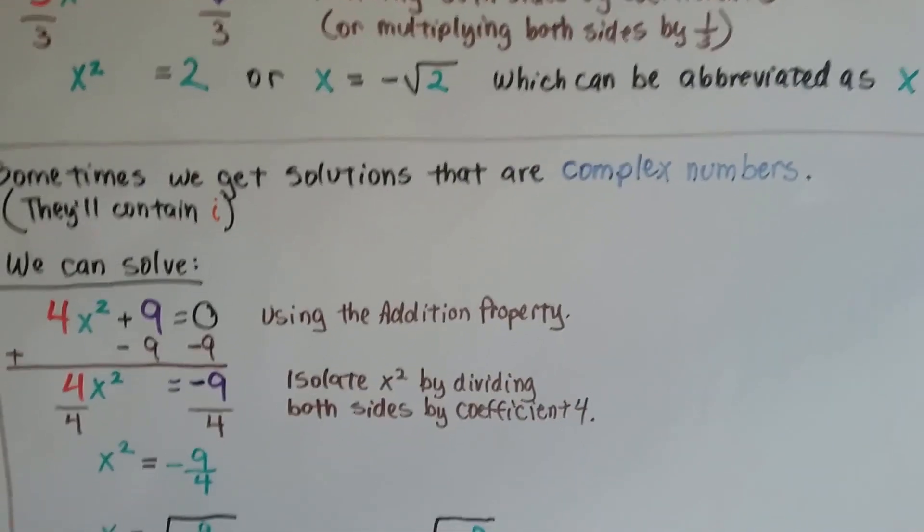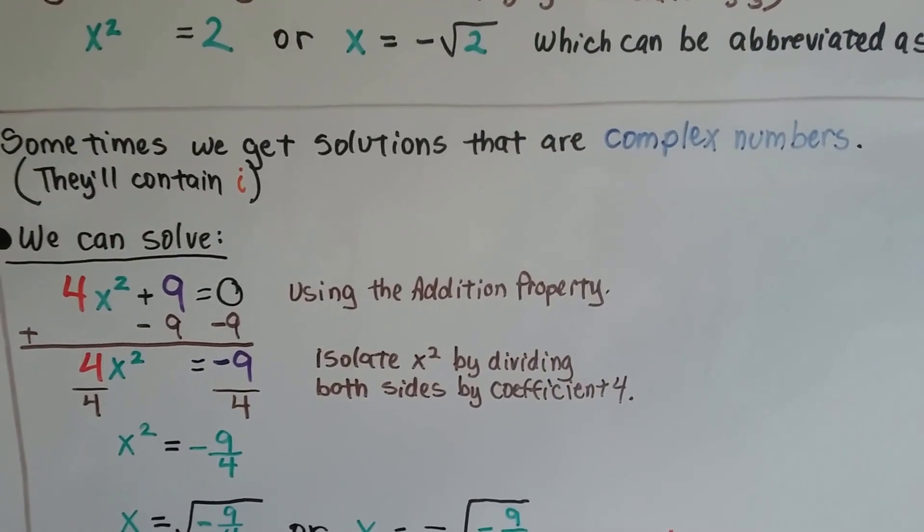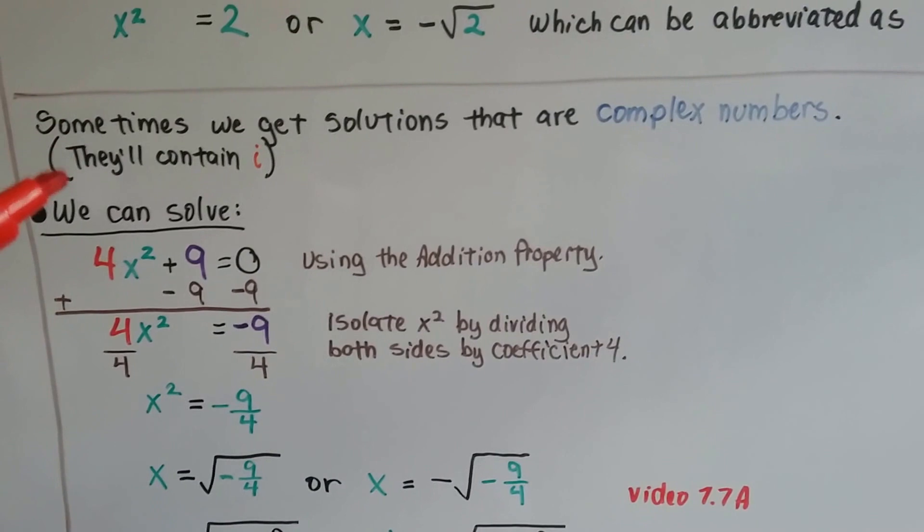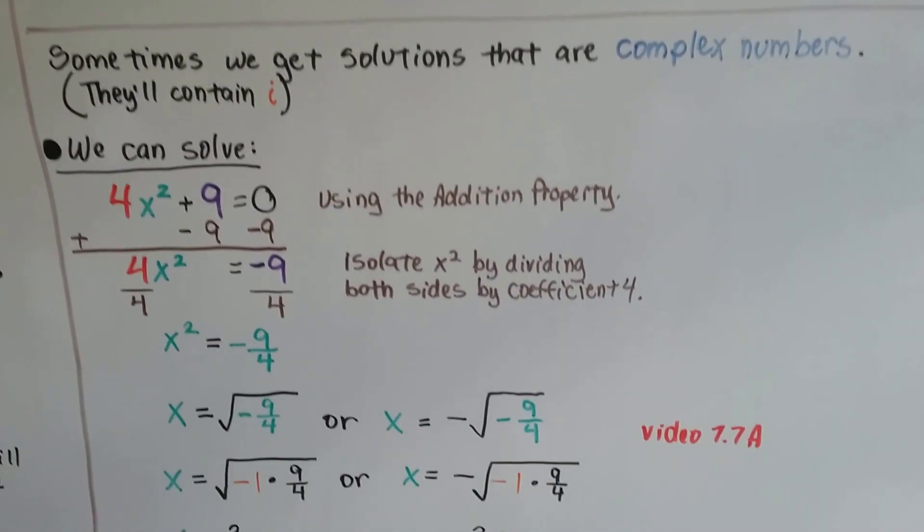So now, b is still going to equal 0. Check this out. Sometimes we get solutions that are complex numbers. That means they're going to contain an i, which we just did in chapter 7.